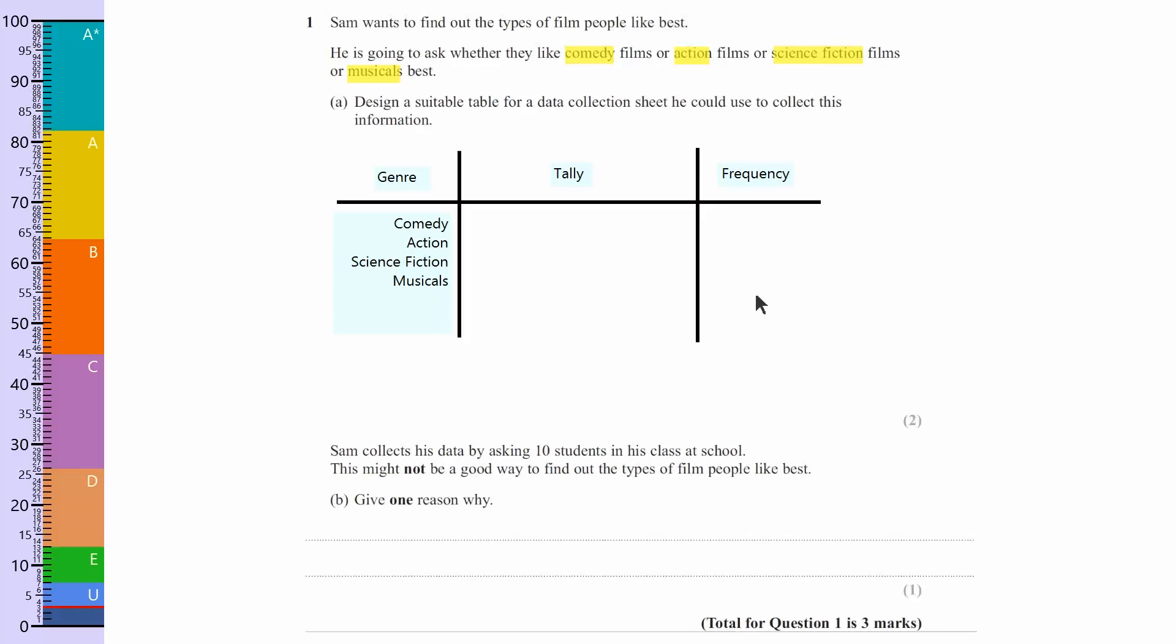Okay? So to get the two marks, you needed a genre column, a tally column and a frequency column. And we'll have a look at the mark scheme in a second. But first, we're going to have a look at this second question.